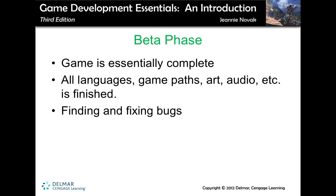Next, you go into the Beta phase. Once you have your complete game finished — all the different paths, art and audio, all the languages — basically the entire game is done. Now you just want to find bugs and fix them. That is when you're in Beta. Beta testers take what is essentially a complete game and try to find bugs and report back so that developers can fix them before sending the game out to a larger audience.